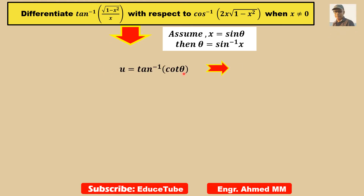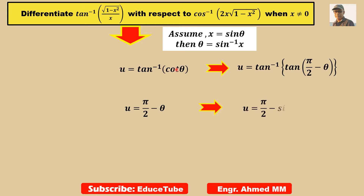So here it is cot theta. But actually we need tan here. So to write tan, we have to write tan of pi by 2 minus theta. Once we write tan, this whole part we can write as only the angle pi by 2 minus theta. Now substituting theta by sin inverse x, we get this.